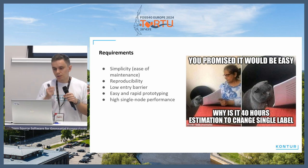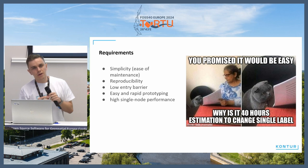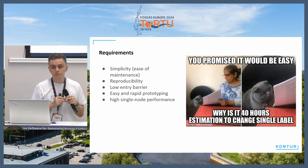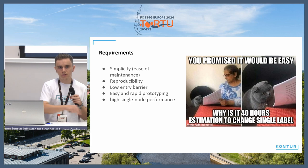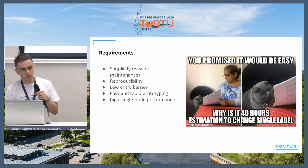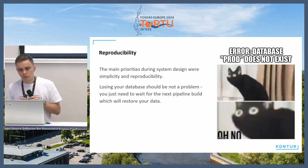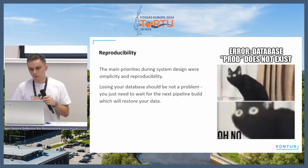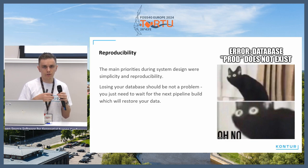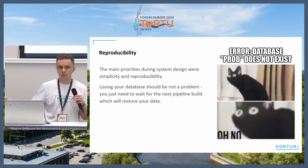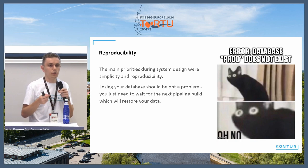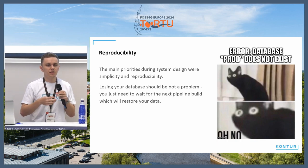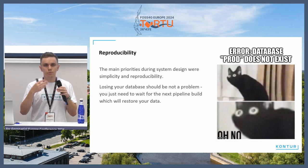Our products have defined a set of core requirements for the software we developed: simplicity, reproducibility, low entry barrier, easy and rapid prototyping from start point to ready-made map, and high single-node performance. The main priorities during system design were explicitness and reproducibility. Losing your database shouldn't be a problem — you just recreate the database and the pipeline will rebuild every piece of data you had. We follow this approach so every layer in Disaster Ninja, any data in our system, can be rebuilt without any losses.